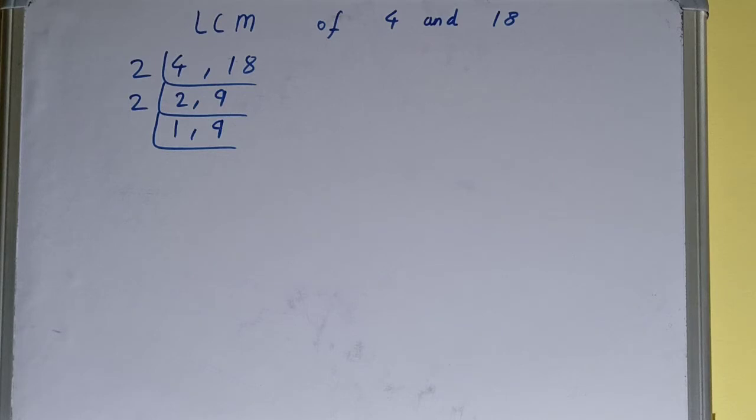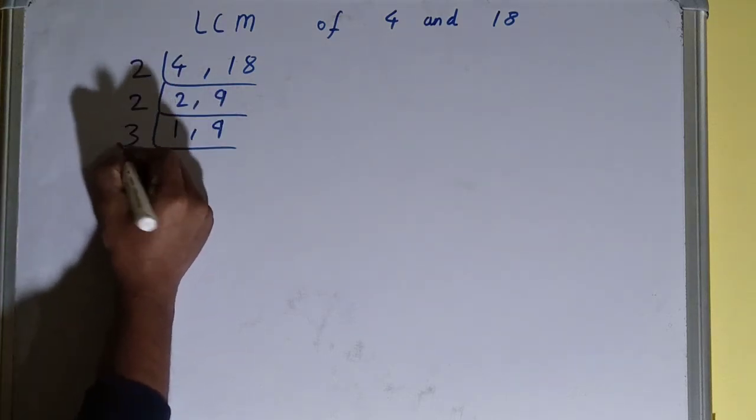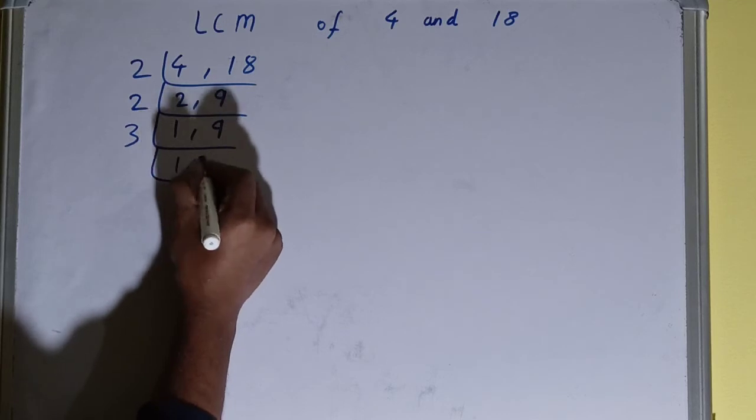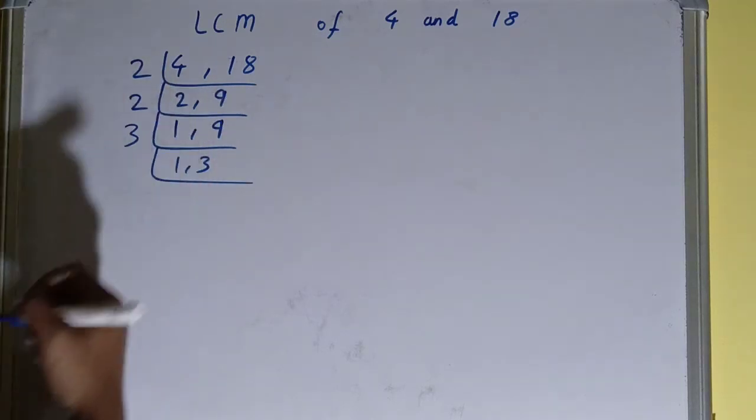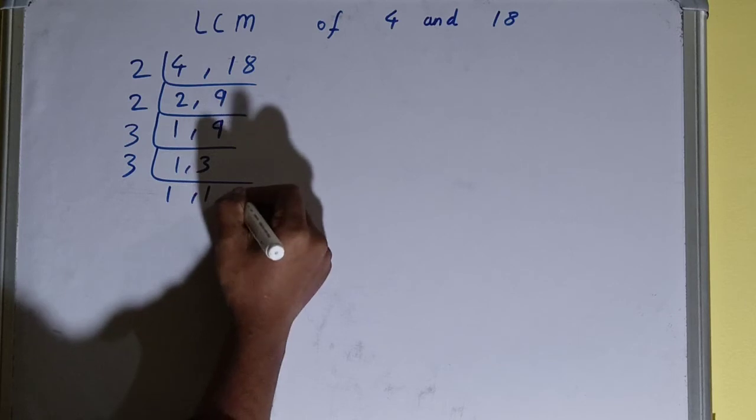And this number is divisible by 3, so divide it. We'll be getting 1 comma 3. Now again, this number 3 is divisible, so divide it. We'll be getting 1 comma 1.